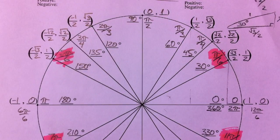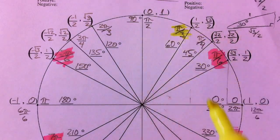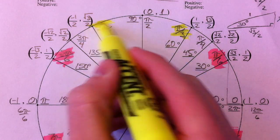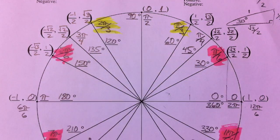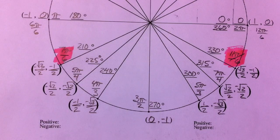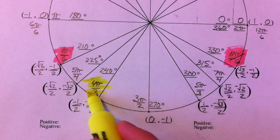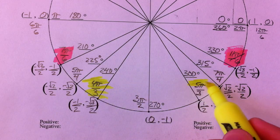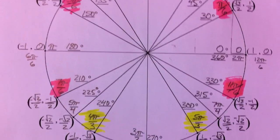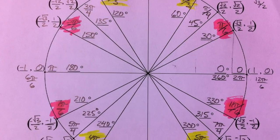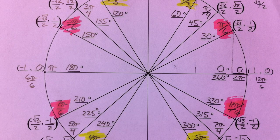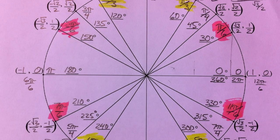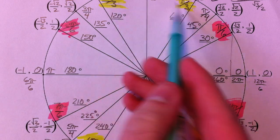Now I want you to notice all the pi over threes: pi over three, two pi over three, four pi over three, and five pi over three. Those are dealing with all the sixty-degree angles, and anytime you have over threes — which are bigger than over sixes — you have the sixty-degree angles; they're closer to the y-axis.